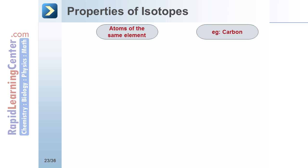Atoms of the same element, for example carbon, with a different number of neutrons are called isotopes. For example, some carbon atoms have 6 neutrons, while some carbon atoms have 7.